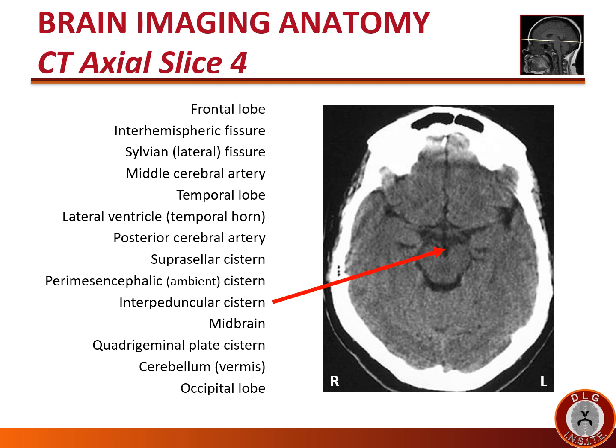The interpeduncular cistern is the small CSF space between the two cerebral peduncles of the midbrain; often you might see the top of the basilar artery here. At this level we continue to see the superior aspect of the midbrain with its distinct shape — ventrally the two rounded cerebral peduncles, and dorsally the smaller humps called the superior colliculi. Right in the middle of the two superior colliculi is a black dot, which is the sylvian aqueduct, also known as the cerebral aqueduct.